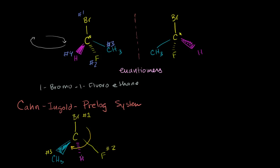We're just ignoring the hydrogen right now — that's sitting behind it. That was the first step, to orient the smallest molecule so it's sitting in the back. And then for the three largest ones, you just say, what direction do we have to go from number one to number two to number three? In this case, we have to go clockwise. And if we go clockwise, then we call this a right-handed molecule, or we use the Latin word for right, which is rectus.